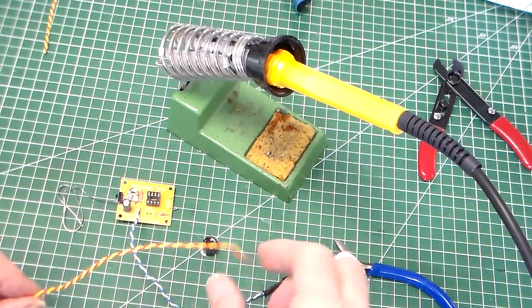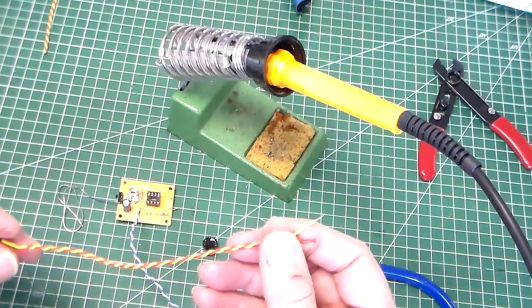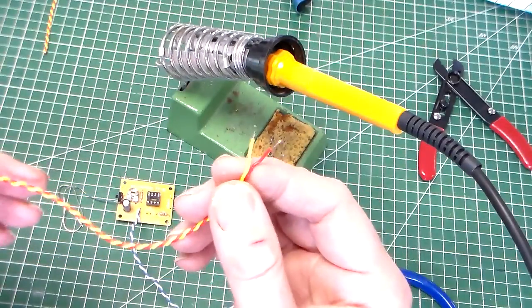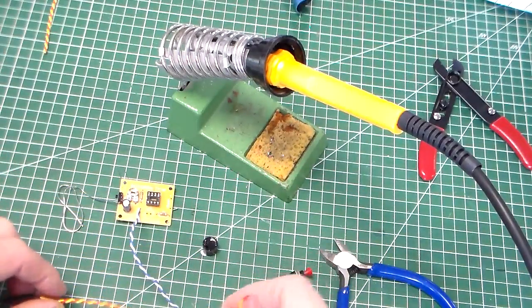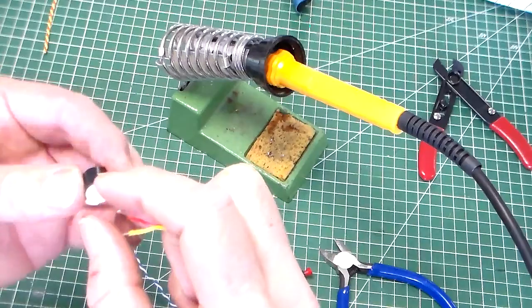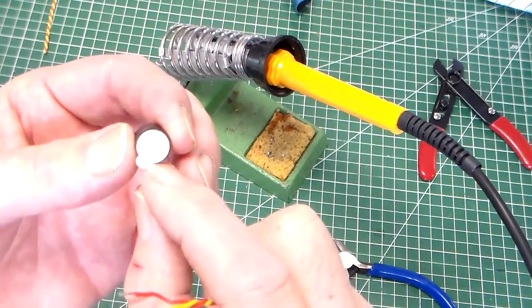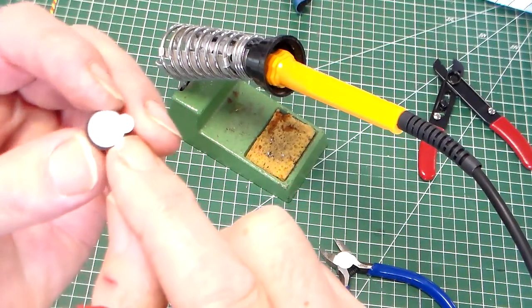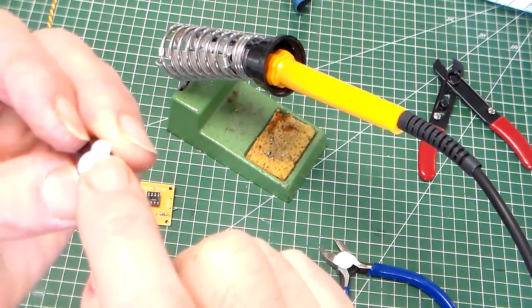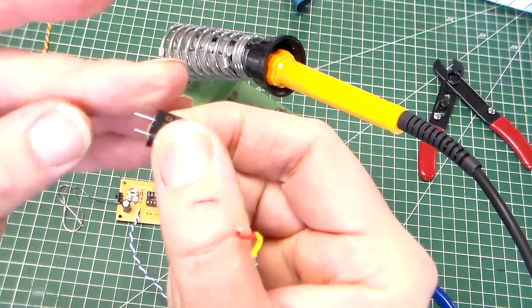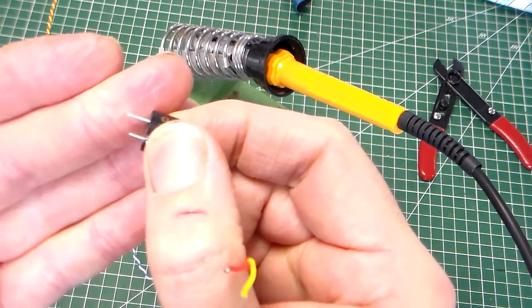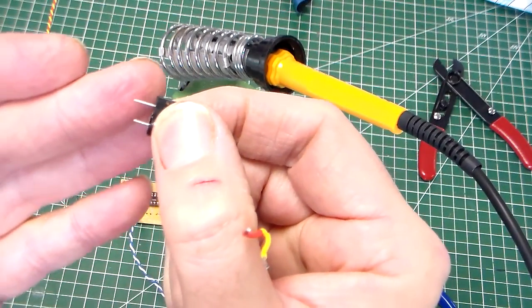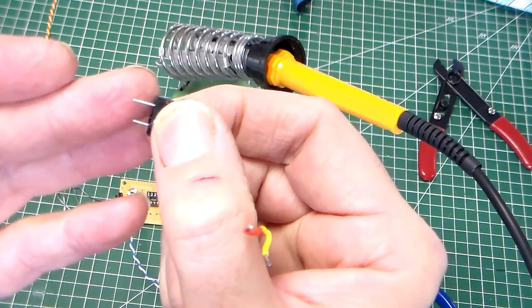Both of these components have polarity, so we have a positive and a negative. For the buzzer, it's shown by a little sticker here that shows positive, which aligns with a long leg. Just like other components, the long leg is positive.